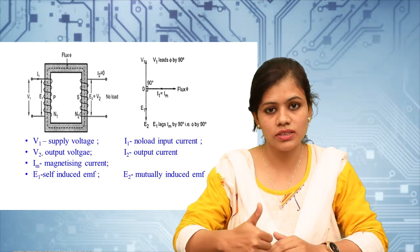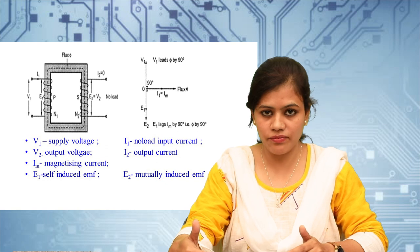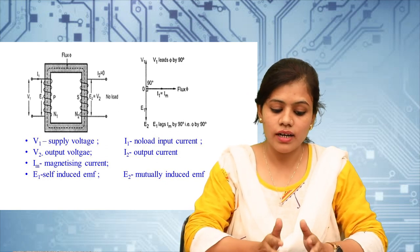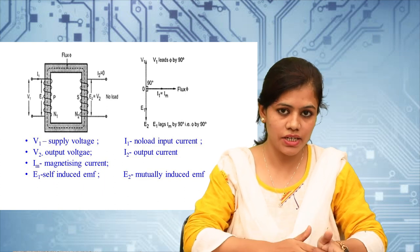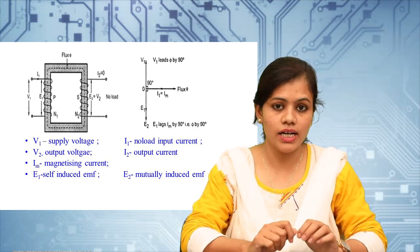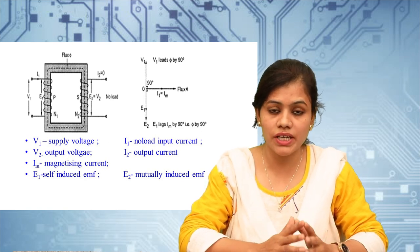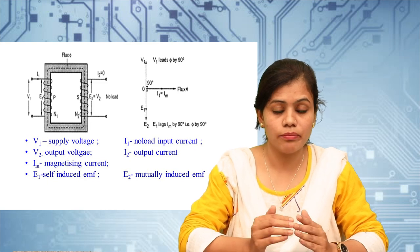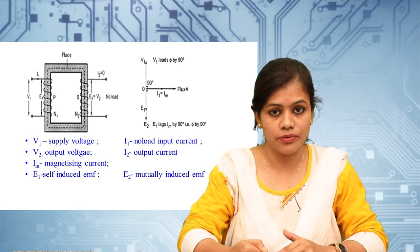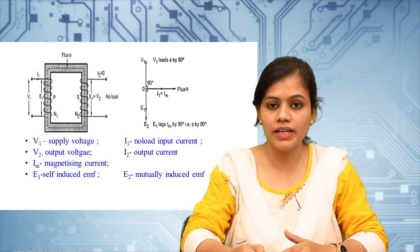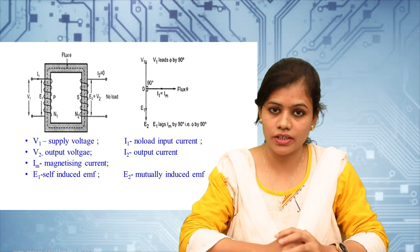Since the current is alternating in nature, the flux is also alternating and both are drawn in the same phase. When the alternating flux links with the primary and secondary windings, EMF is induced in both according to Faraday's law of electromagnetic induction. Both induced EMFs, E₁ and E₂, lag behind the flux by 90 degrees. I hope you understand. We have covered the introduction, construction, types of transformer, working principle, and EMF equation. I will continue in the next session. Thank you.